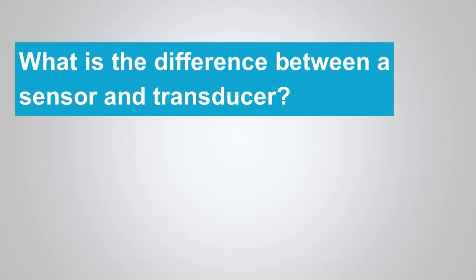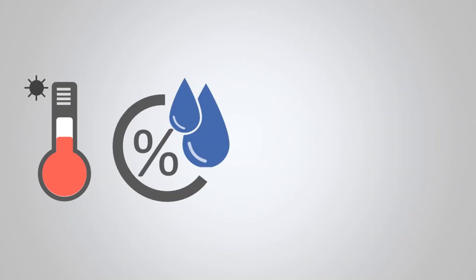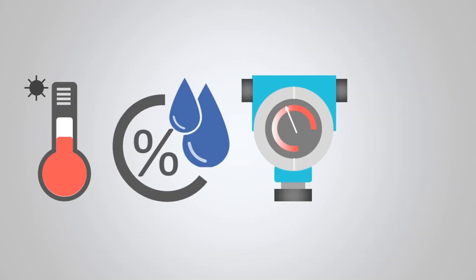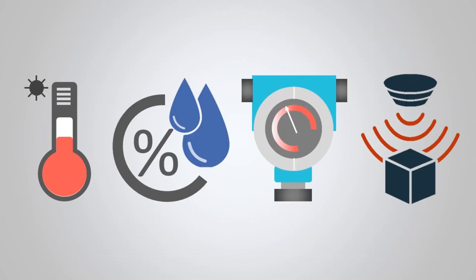Measurement is an important subsystem of a mechatronics system, which is used to collect information on system statuses such as temperature, humidity, pressure, or proximity, and is fed to the microprocessors for controlling the system.